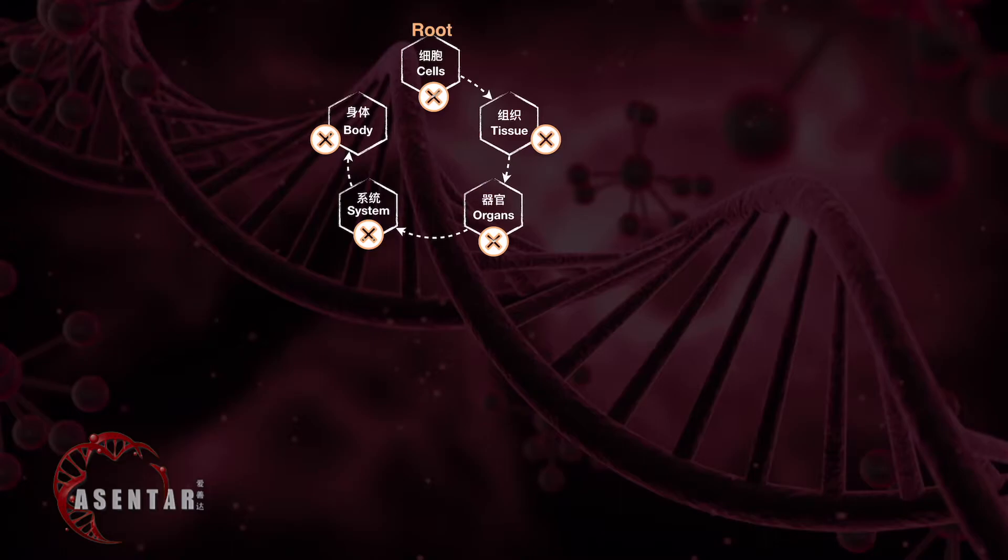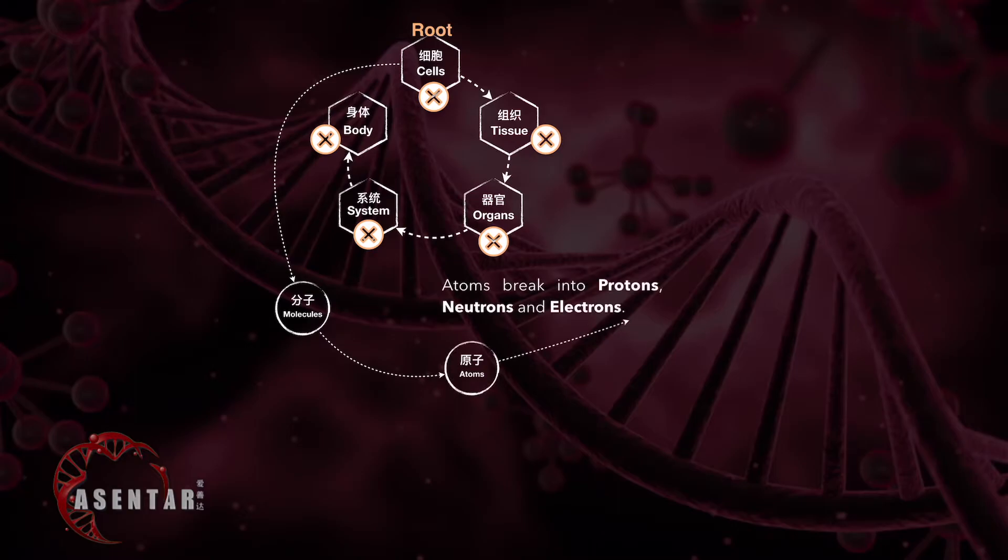Once we want to solve the roots, let's take a closer look. Break down cells further and you will see molecules. Break down molecules further and you will see atoms. Atoms break into protons, neutrons, and electrons - these are the three different parts that we all know.